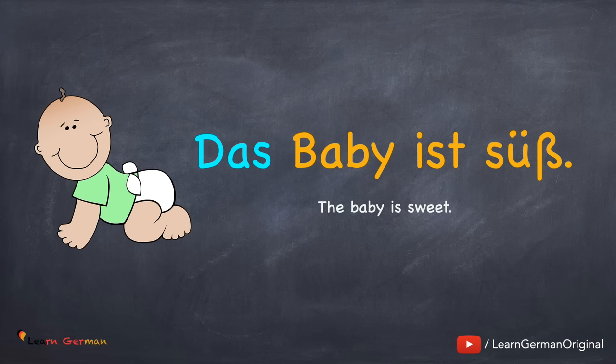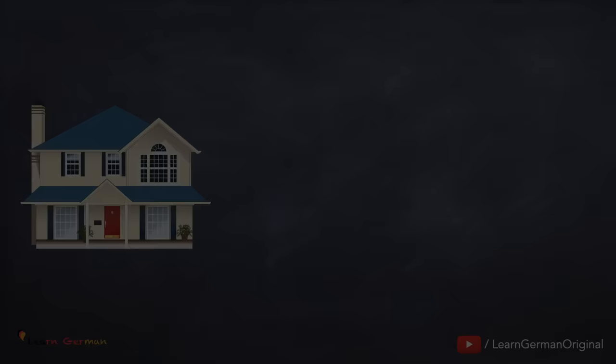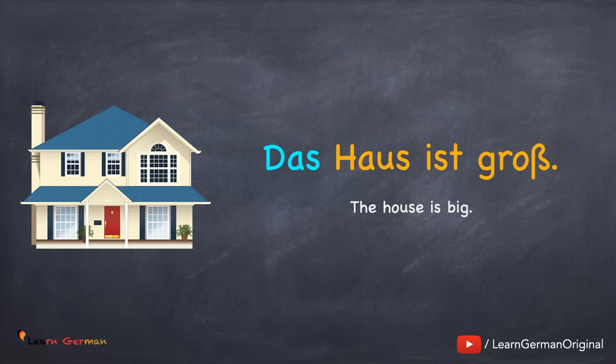The next one is das. Das Baby ist süß. Baby is the Nominativ Subjekt and the article is das. Das is the article for neutral. Similarly, in the next sentence: Das Haus ist groß. The noun in this sentence is Haus and the article is das. You'll notice that some of the nouns in these examples are either persons or things — irrespective of that, all of them have an article. So, there are basically three articles: der, die, das.